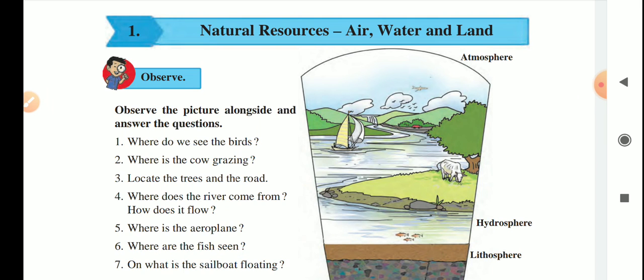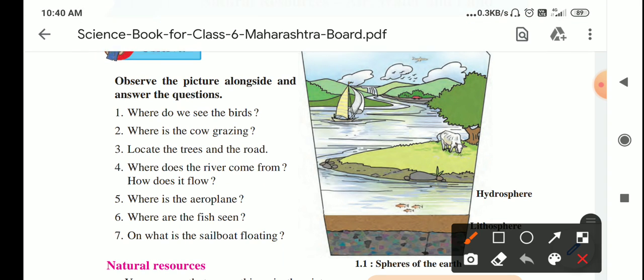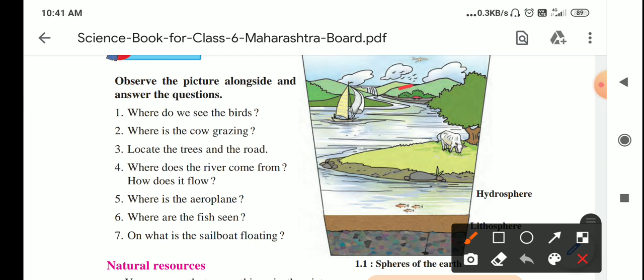Let us observe this picture alongside and answer simple few questions asked here. First question, where do we see the birds? We see the birds right here in the sky. Where is the cow grazing? The cow is grazing on the ground, on the land, alongside the river. Locate the trees and the road. Here we can see a small road and we can locate a tree. It is both road and the land. Trees are on the land.